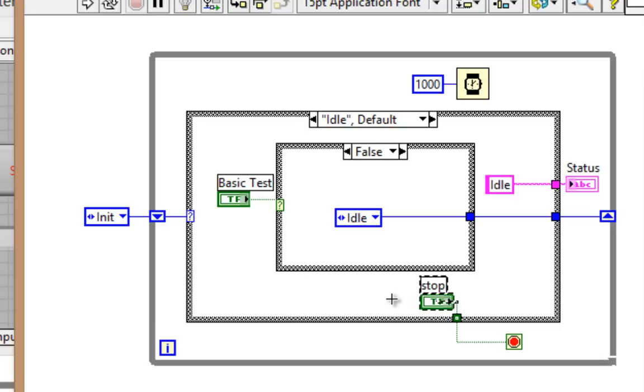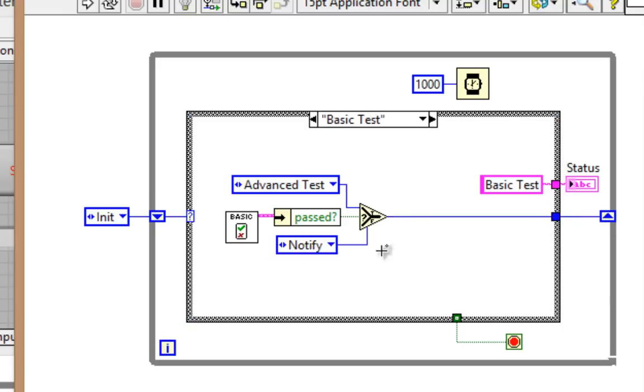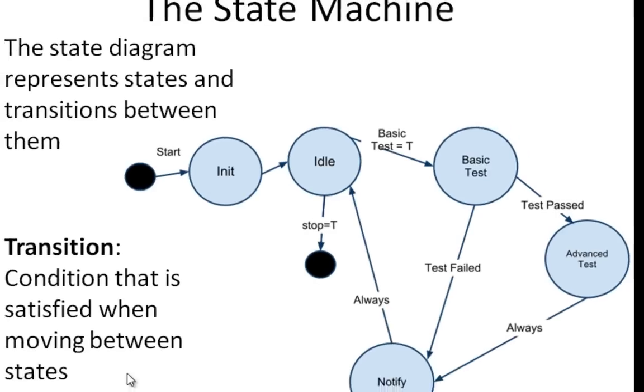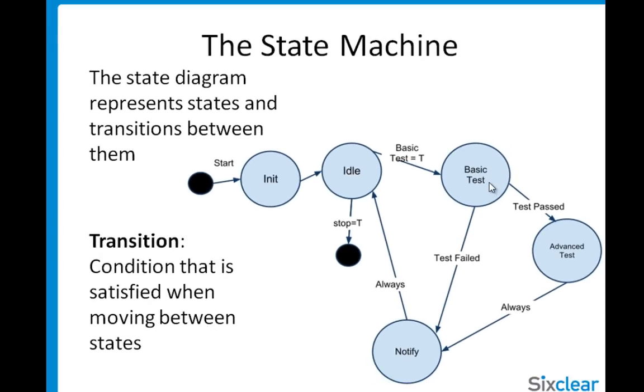We're also pulling that stop button to see if it's been pressed. If, on the other hand, the user clicks on the basic test button, we go to basic test. Goes into the right shift register, comes out the left, and we call the basic test sub-VI. As we saw in our state transition diagram, in basic test, we're checking to see if the test has passed, pass or fail.